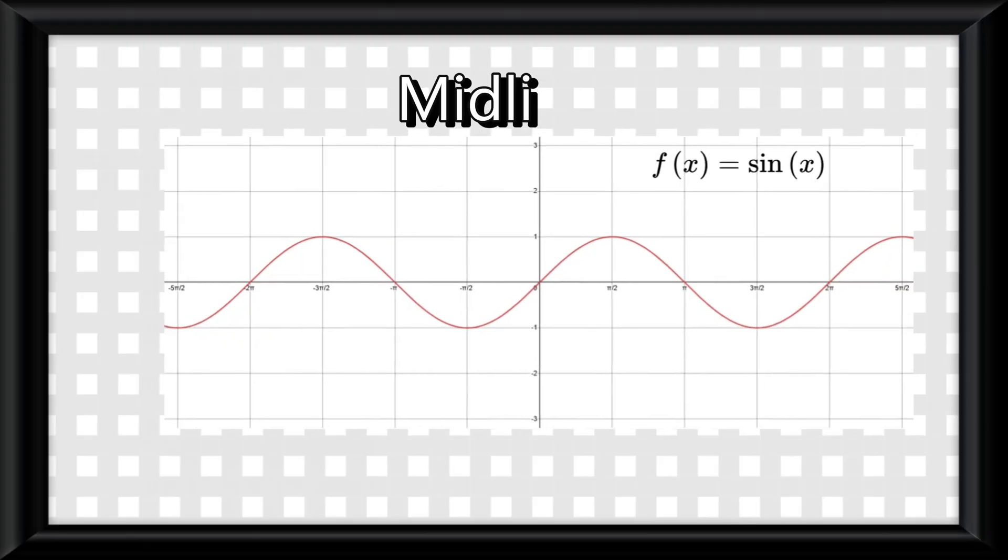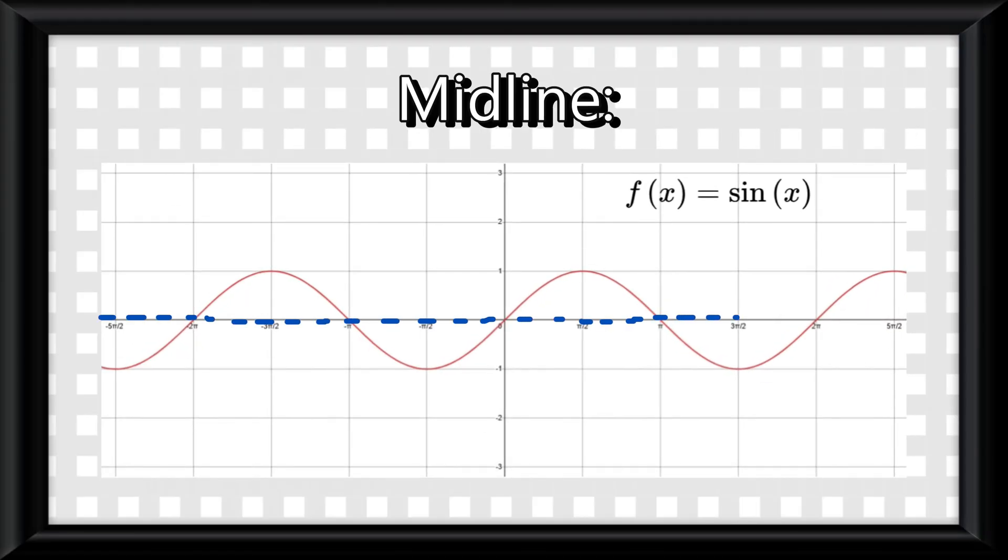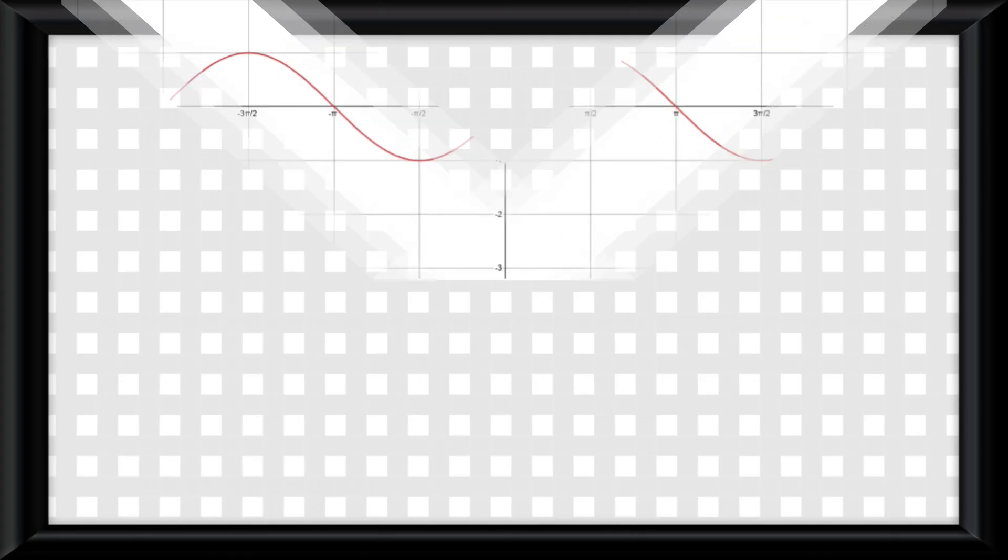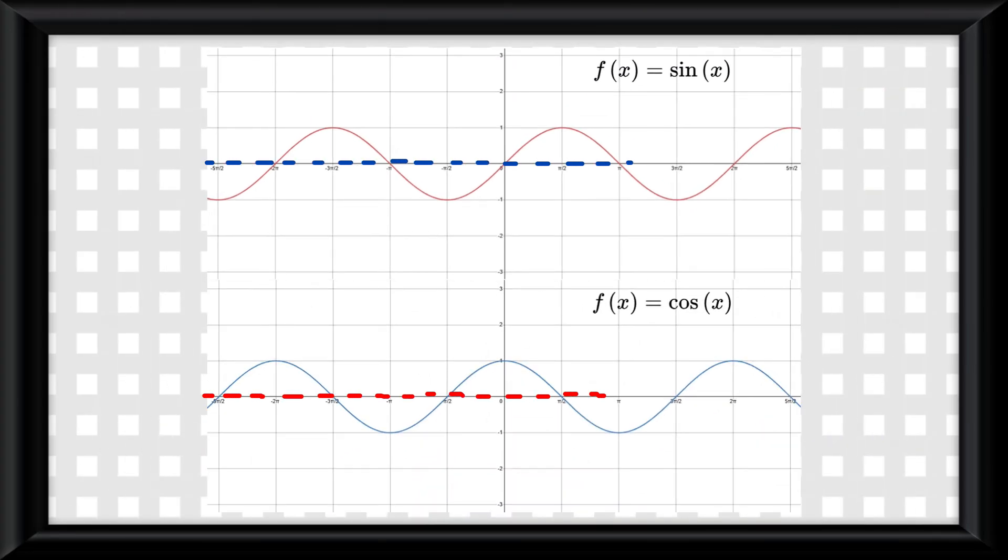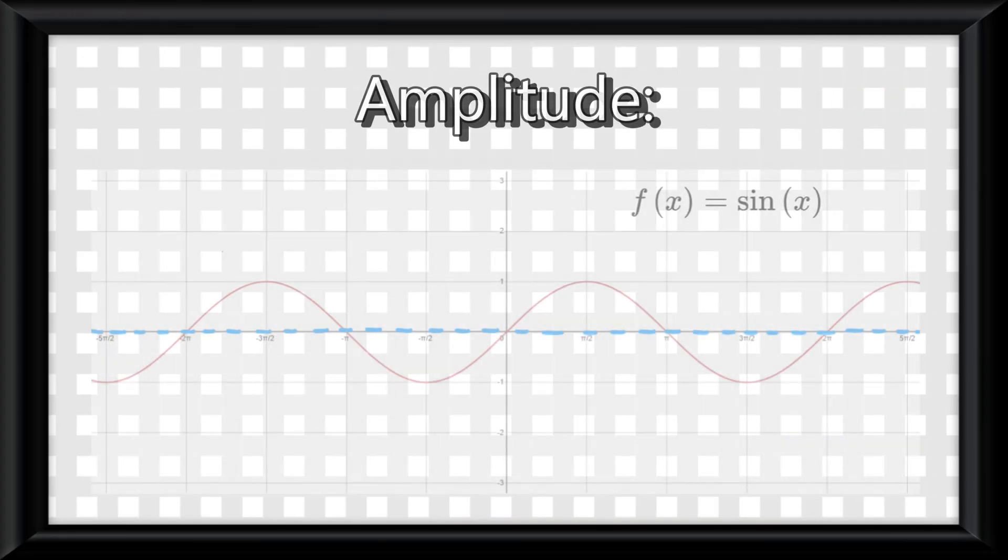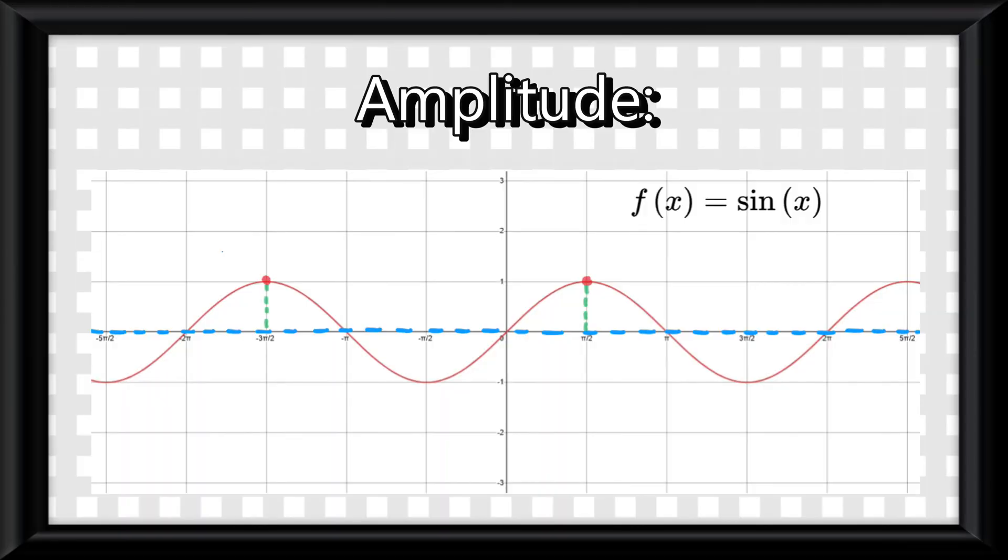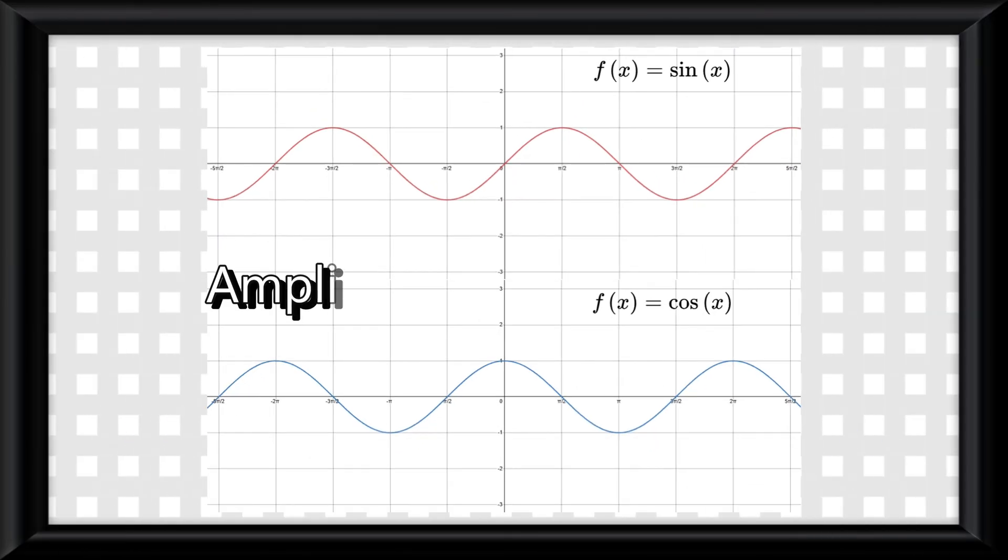A midline of a sinusoidal function is the invisible line that's halfway between the minimum and maximum points. The midline of the parent sine and cosine graphs is y equals 0. The amplitude of a sinusoidal function is the vertical distance from the midline to the maximum point on the graph. That means in the parent sine and cosine graphs, the amplitude is 1.